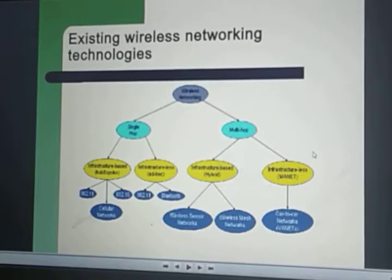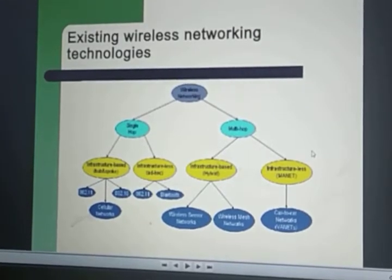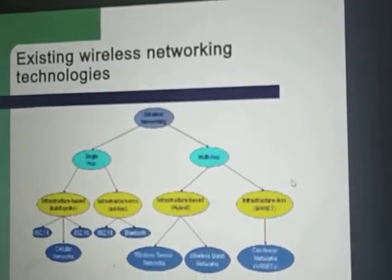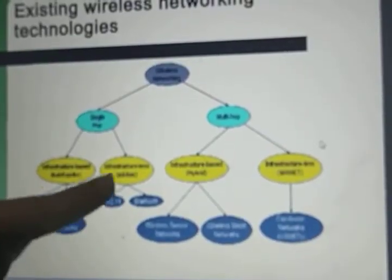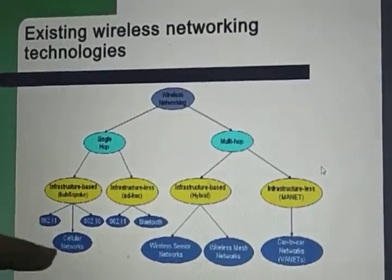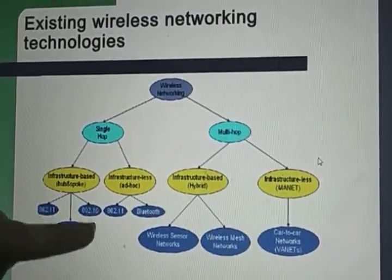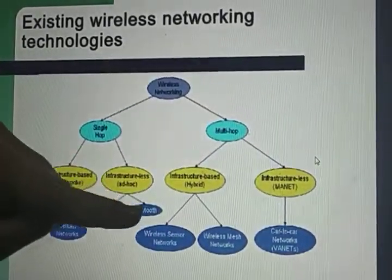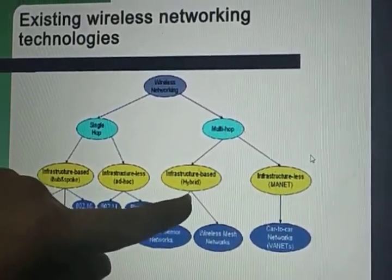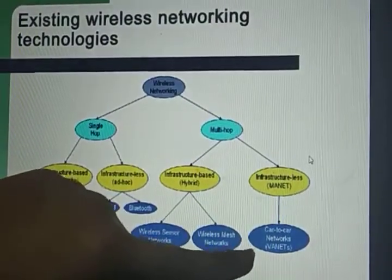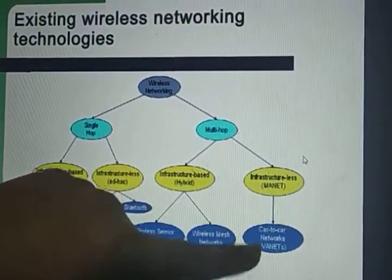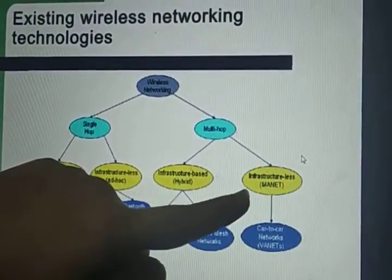Existing wireless networking technologies include the single hop and multi-hop architecture, which can be further divided into infrastructure-based and infrastructure-less architecture. Under the single hop architecture we have cellular networks, whereas under multi-hop we have wireless sensor network and wireless mesh network, which are infrastructure-based, and VANET — vehicular ad-hoc network — which is a kind of MANET and is infrastructure-less.